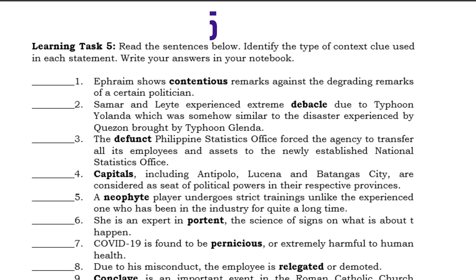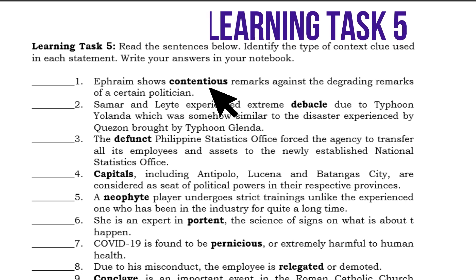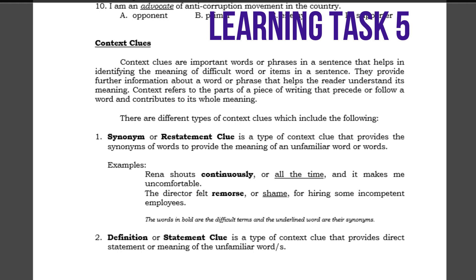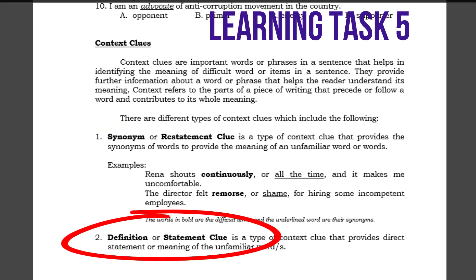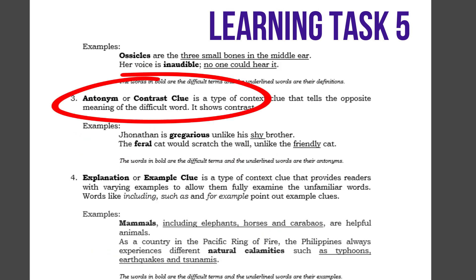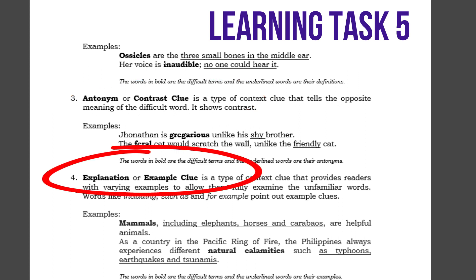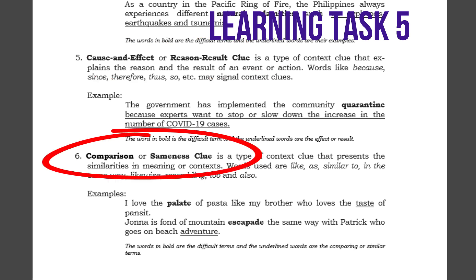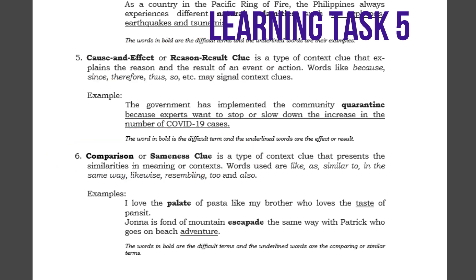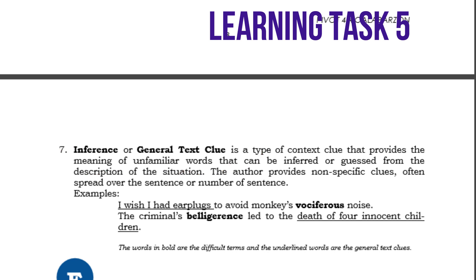For Learning Task Number 5 on page 10, all you have to do is to study the statements carefully, and then categorize what type of context clue is used per statement. Your choices are the different types of context clues that we have discussed in online class, or for modular classes, the types of context clues found on pages 7, 8, and 9.